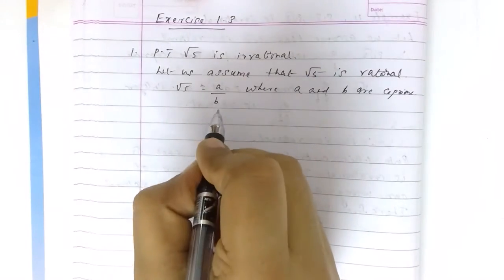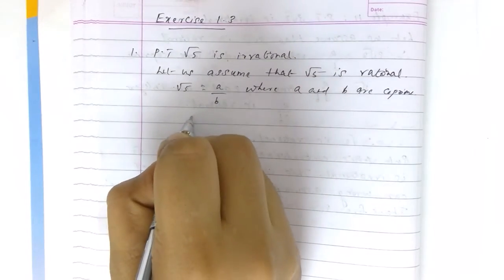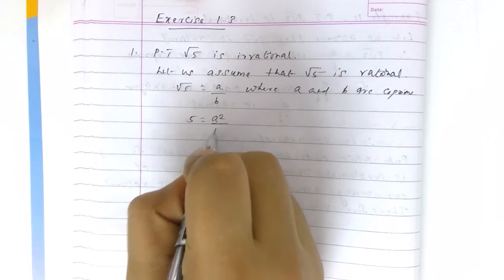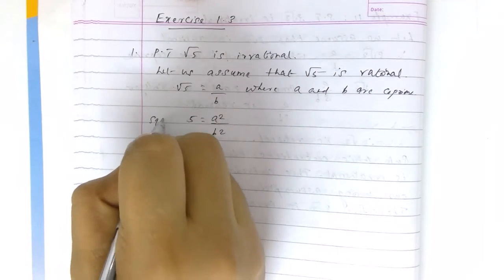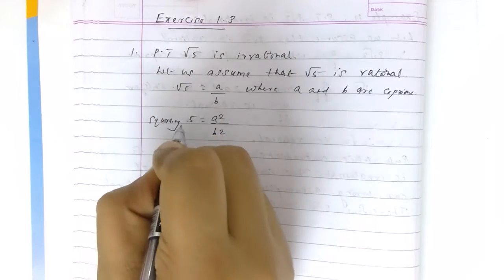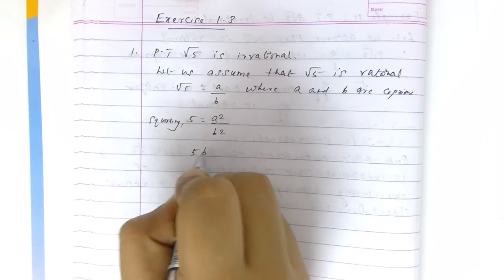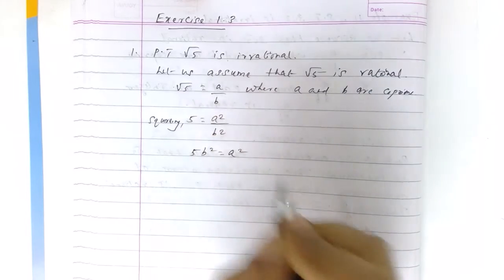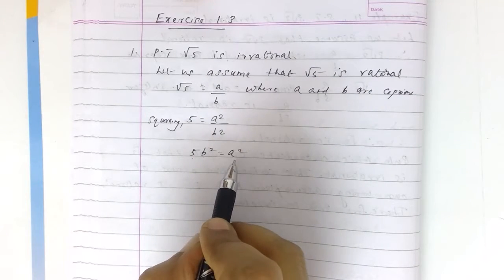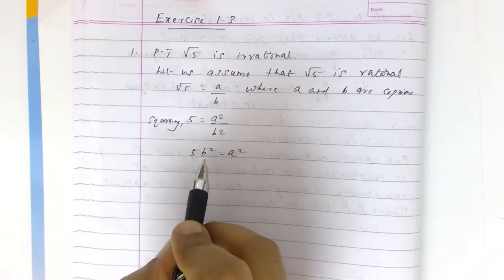So root 5 is equal to A by B. Squaring both sides, we get 5 is equal to A² by B². Cross multiplying, 5B² is equal to A². This means that 5 divides A².